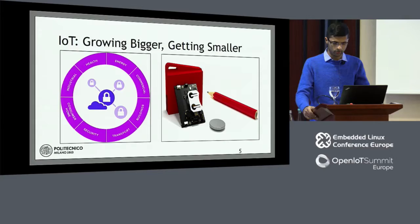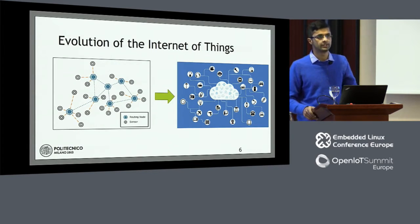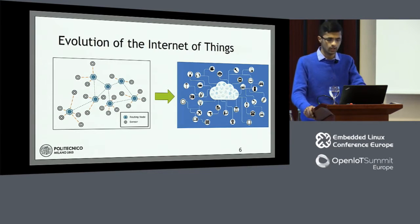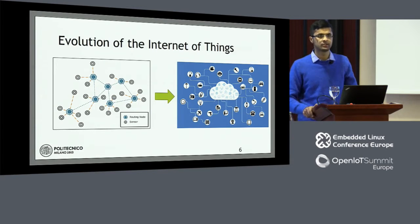One of the contributing factors is that devices themselves are getting smaller — the sensors, the antennas — making IoT more ubiquitous, as it was supposed to be. If you look at the evolution of the Internet of Things, there are many contributing technologies that can be termed as enablers, and wireless sensor networks is one of them.